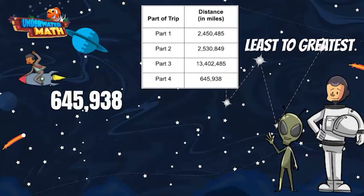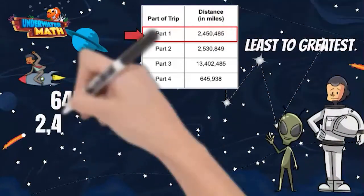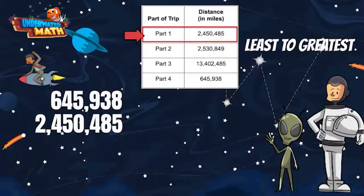Now, let's look for the next smallest number. We have two numbers that have a 2 in the millions place value. Let's look at the next digit. Part 1 has a 4 in the next place value, and part 2 has a 5. This means part 1 is a smaller number than part 2. Part 1 will come next, followed by part 2.